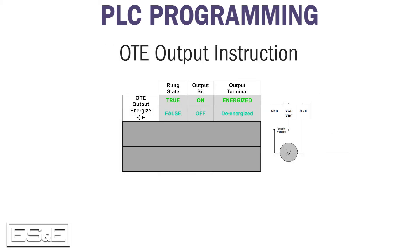The OTE output instruction is easy to understand because it will either be on or off based on how the PLC solves the related input conditions. If the rung solves true, the output is on, and if it solves false, it's off.